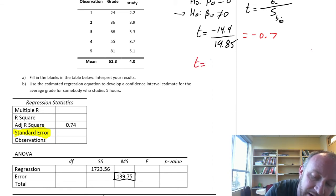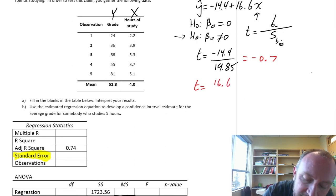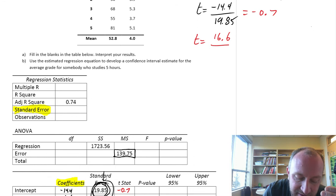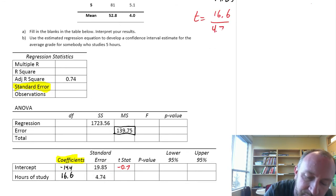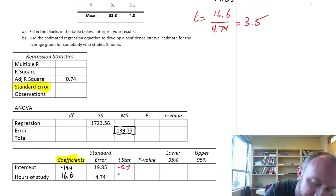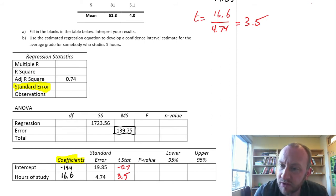For our slope coefficient: 16.6 divided by its standard error of 4.74 gives us a t-statistic of 3.5. Those calculations are relatively straightforward. Now we can go to our t-tables to obtain our p-values.